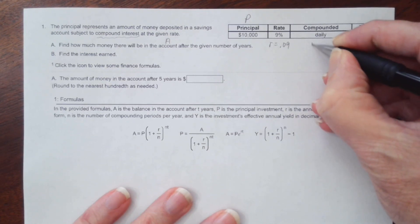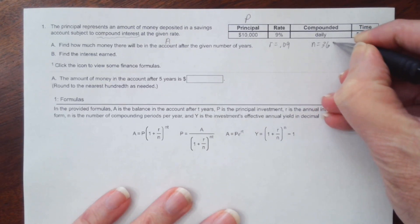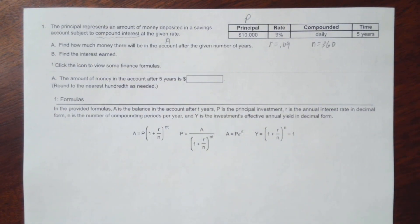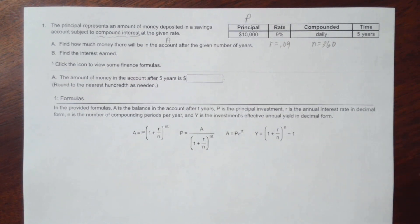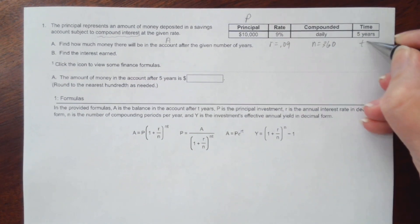Because it's compounded daily, we'll use n equals 360. That means once a day they're applying interest to your account so that the next day you're getting interest on what you originally put in plus any interest you've already earned. And our time is five years.